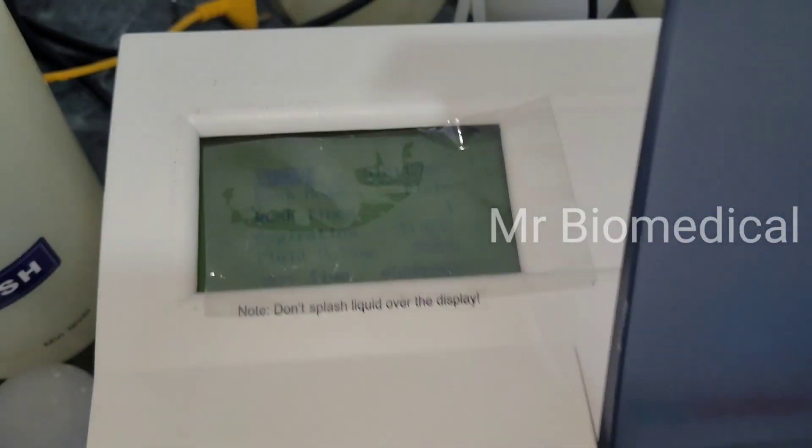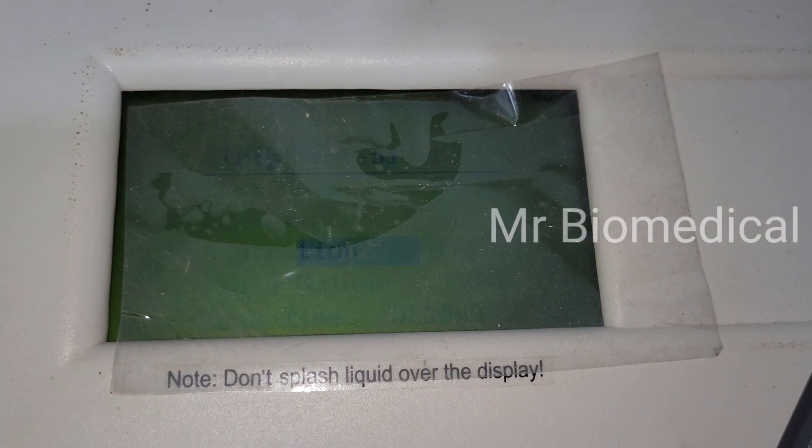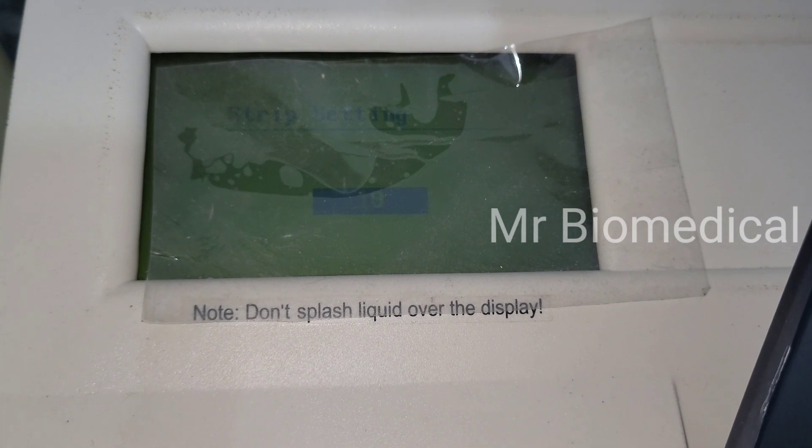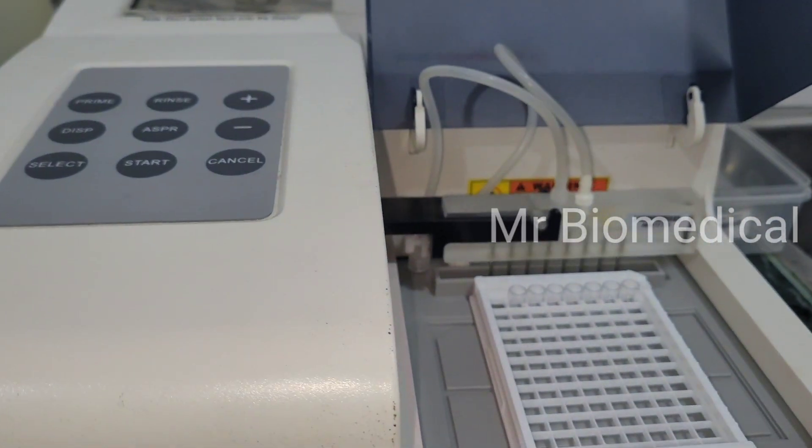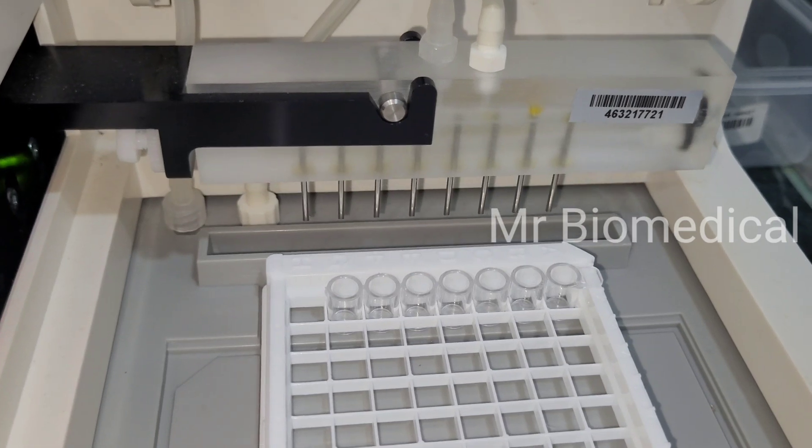Now let's start with a wash. Just press the start button and this is a strip count and we have only one row of cuvettes.